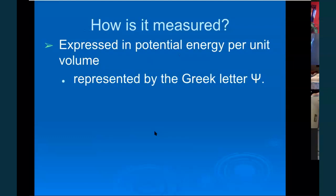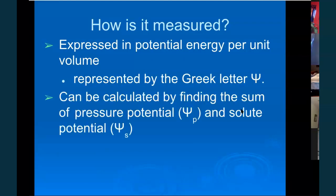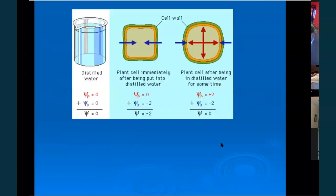We use the Greek letter psi as the symbol for water potential, and it's a unit of energy. It can be calculated by finding the sum of pressure potential and solute potential — I'm using psi for all of these with a subscript to represent each type of potential. You should be able to calculate this; you'll see it on the AP class formula sheet, so you don't have to have it memorized.